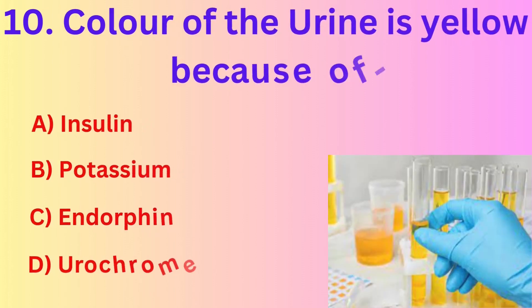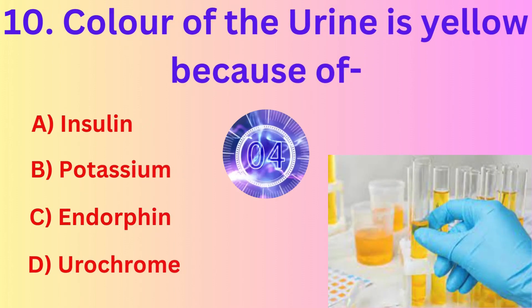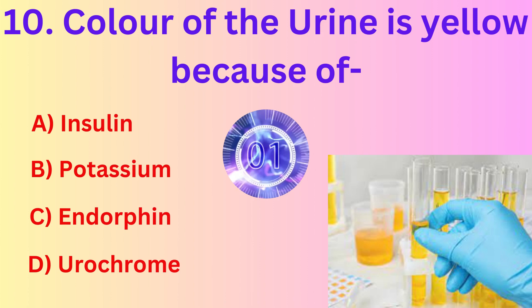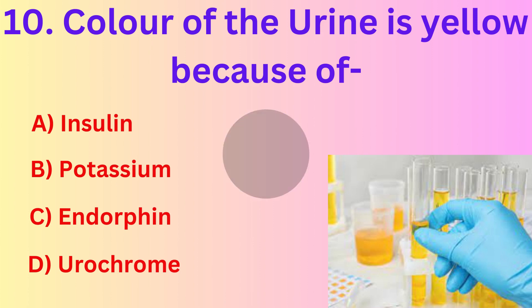The colour of urine is yellow because of what? The correct answer is option D, urochrome.